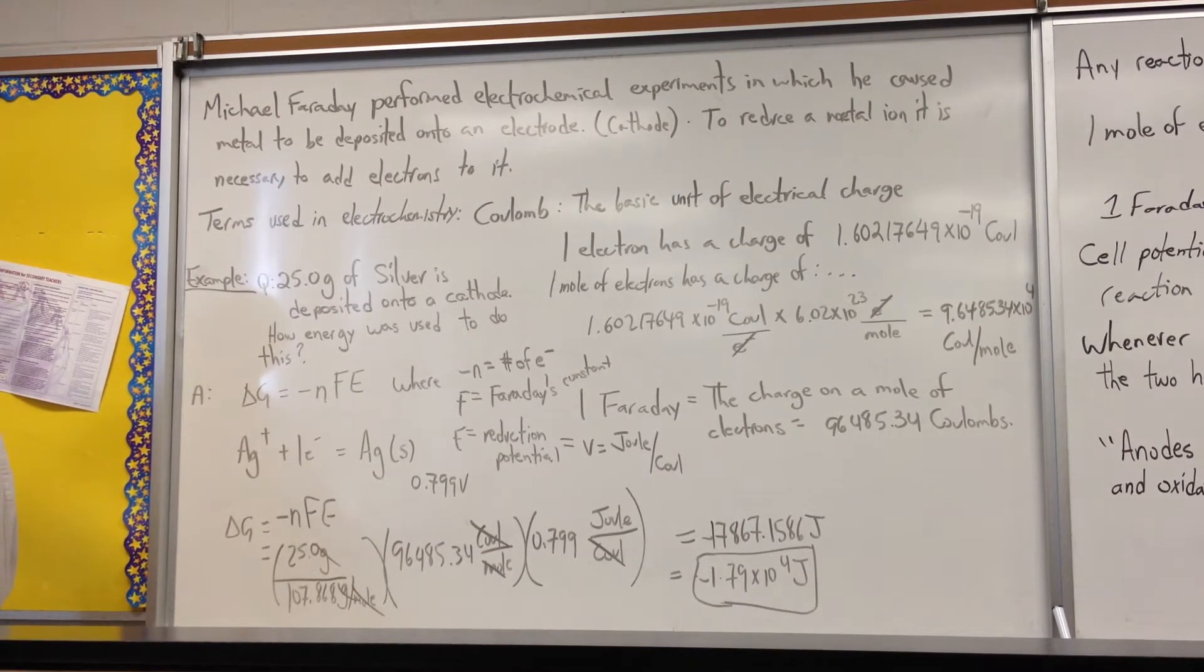Michael Faraday performed experiments in which he caused metals to be deposited onto an electrode, a cathode. To reduce a metal ion, it is necessary to add electrons to it. They were using batteries at the time to do these experiments.